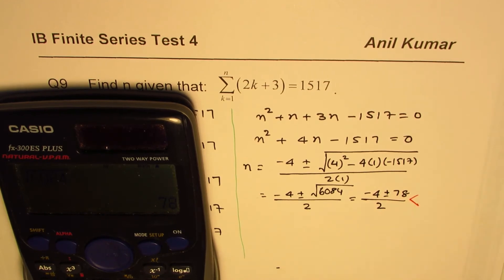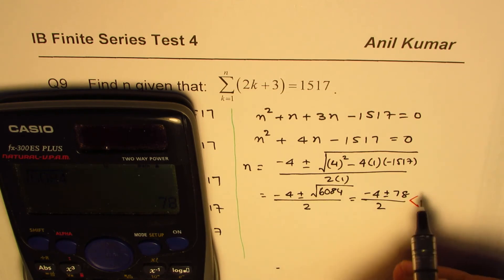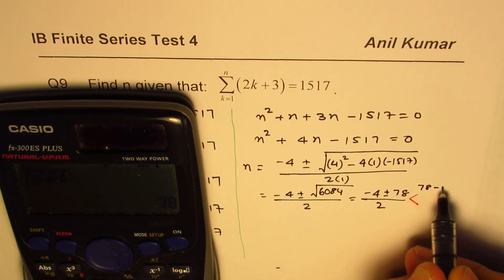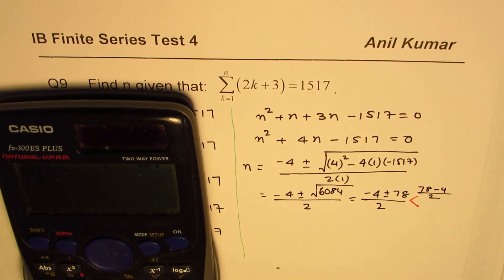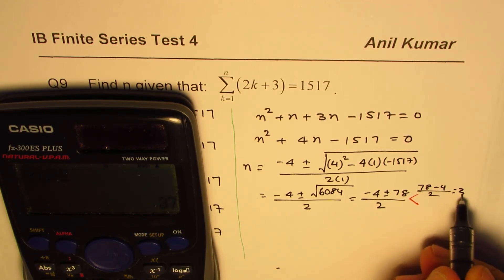So we have two answers, one with the positive sign, one with the negative sign. So we'll do 78 minus 4, that is 78 minus 4 divided by 2, which is the right answer.